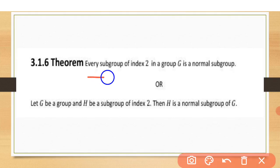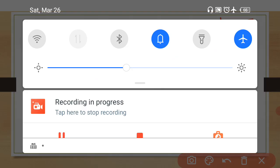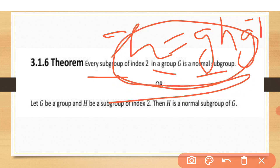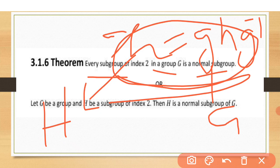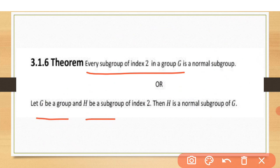Here is the theorem: every subgroup of index 2 in group G is a normal subgroup. We will prove that the condition for a normal subgroup is H = gHg⁻¹, where g belongs to G. This condition tells us that it is a normal subgroup. So let G be a group and H be a subgroup of index 2. Then H is a normal subgroup.